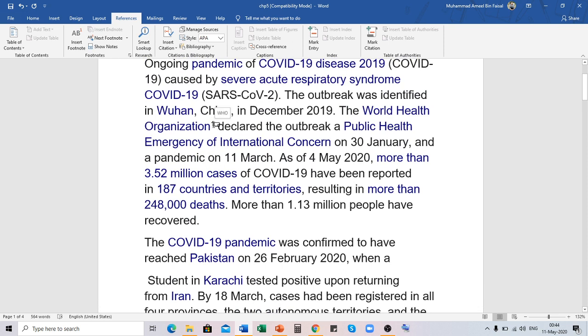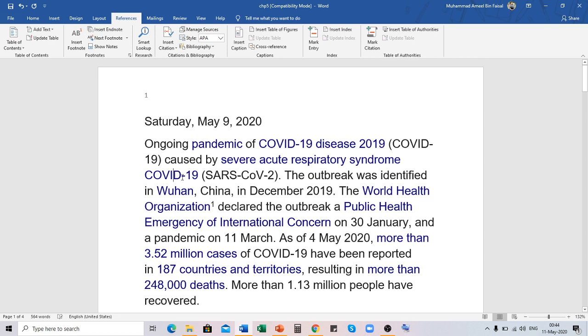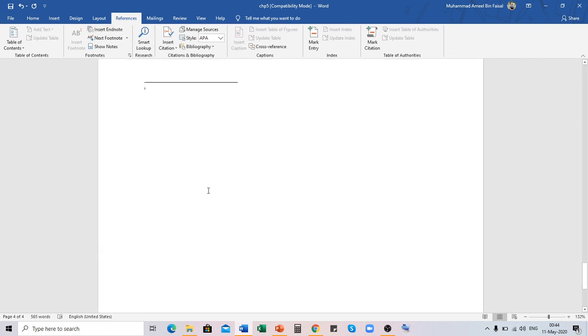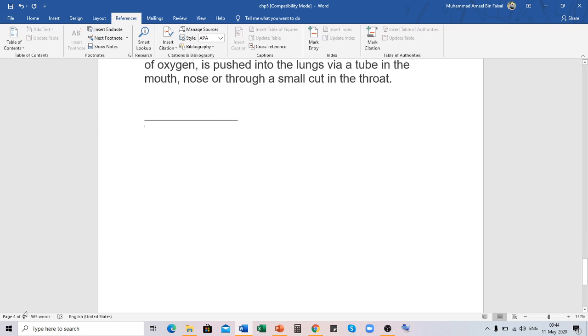You can see this number one as it is also placed on World Health Organization. This is called referencing which refers the text to the footnote. Similarly you can also insert endnote that will be placed at the end of the document. As we are having four pages in this document, so the endnote will be placed at the end of page four.